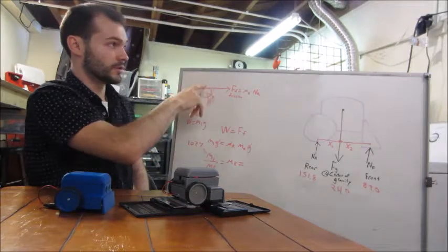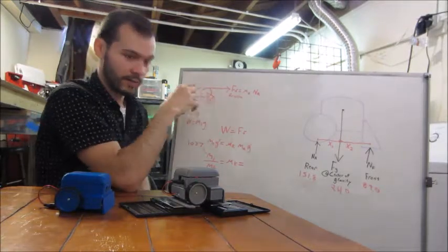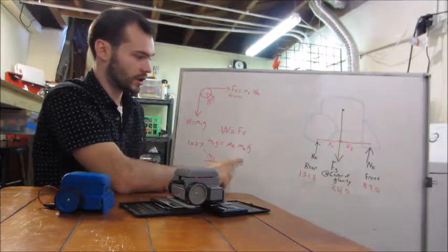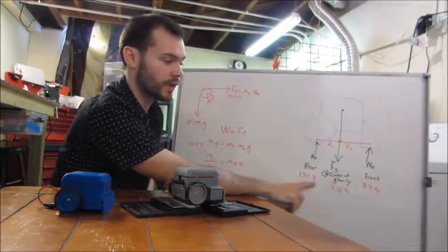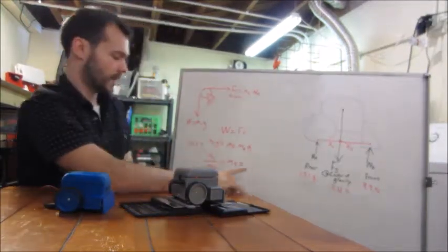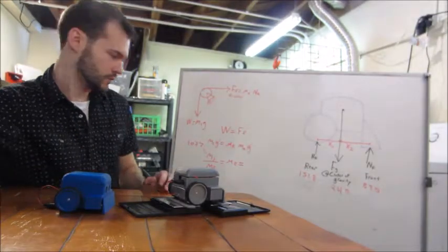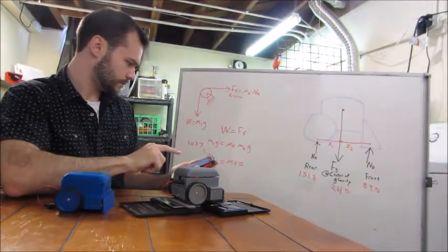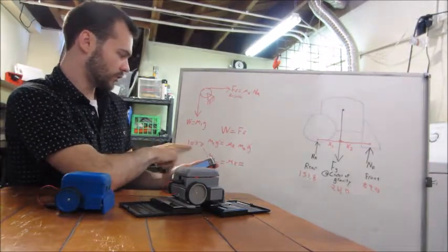So now to refer back to the free body diagram I had on the other side of the board, I just redid the calculation using 151.8 grams instead of the full weight. The mass of the coins was 103.7.